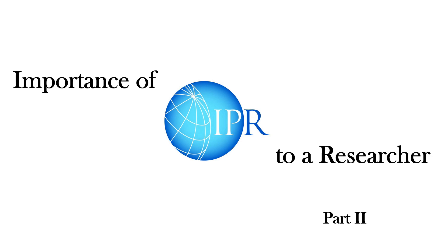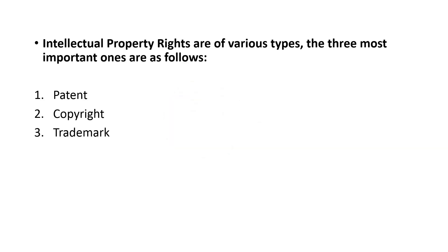Welcome to another episode of JAS Networks. Today we are discussing the second part of the importance of IPR to a researcher. Intellectual property rights are of various types, and the most important ones are patent, copyright, and trademark. Let us see one by one, starting with what is a patent.